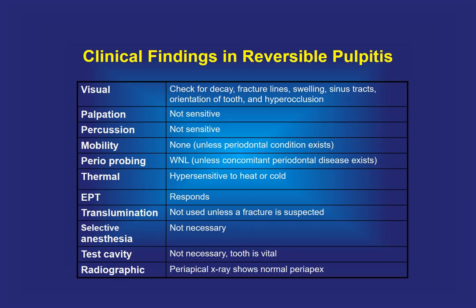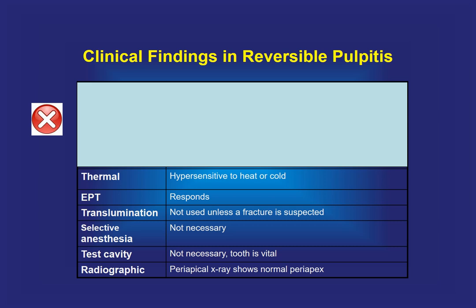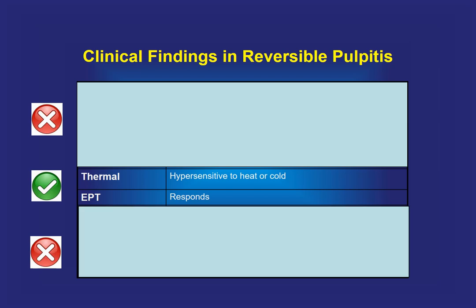Clinical findings in reversible pulpitis: since the inflammation is still inside the pulp, we cannot use visual, palpation, percussion, mobility, or periodontal probing tests. The useful tests are thermal testing, electric pulp tester, transillumination, selective anesthesia, and test cavity. Radiographs are not needed for reversible pulpitis.